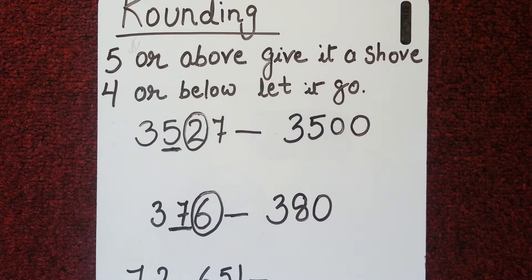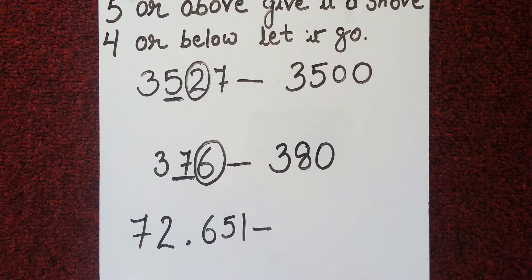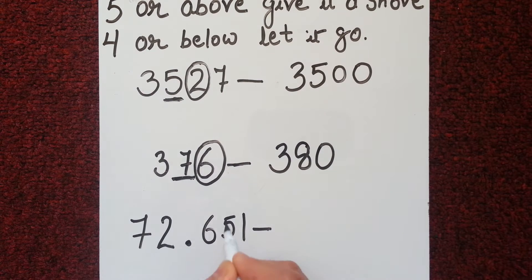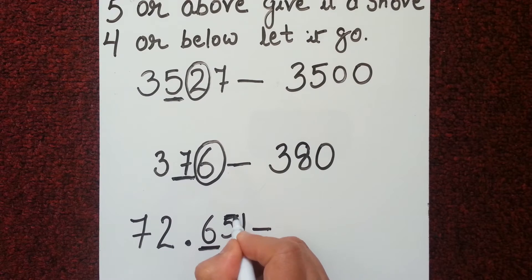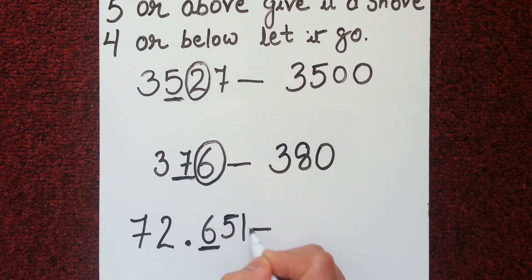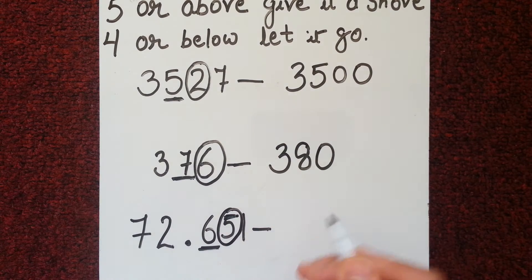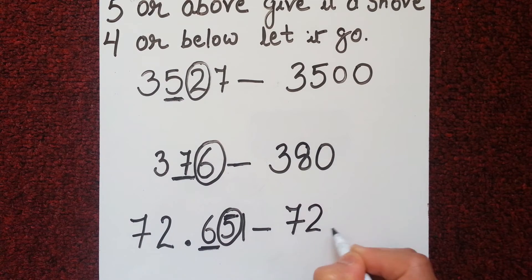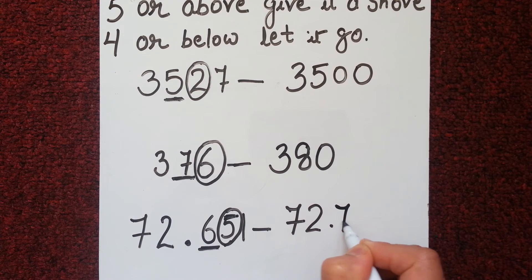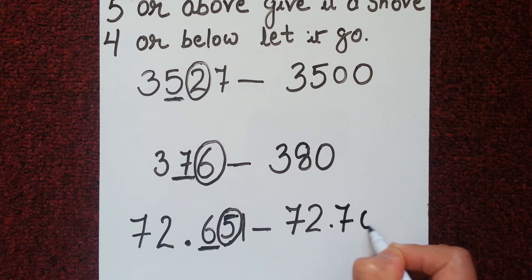Now let's see another example with a decimal point. The number is 72.651. We want to round this number to the tenths place. The number on the right-hand side of the tenths place is five, so we give it a shove. The number after rounding will be 72.700.